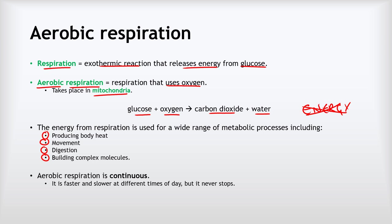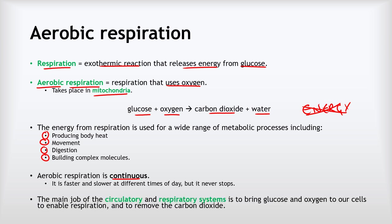Aerobic respiration is a continuous process. It is faster and slower at different times of day but it never stops. The point at which aerobic respiration stops is the point at which we all stop — it's death. The main job of the circulatory system and the respiratory system is to bring glucose and oxygen to our cells to enable respiration, and also to remove the carbon dioxide produced by that respiration.